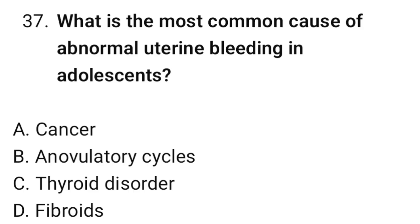Question No. 37: What is the most common cause of abnormal uterine bleeding in adolescence? The correct option is B. Anovulatory cycles.